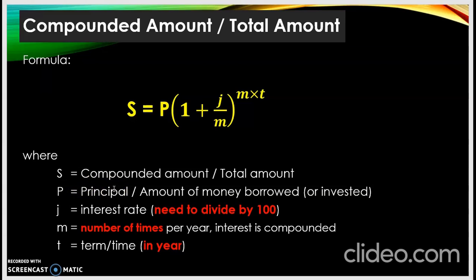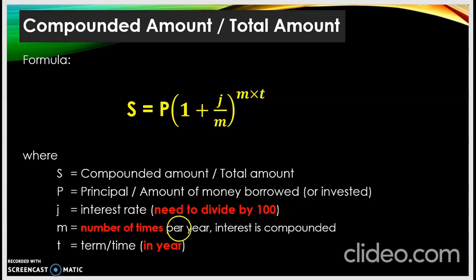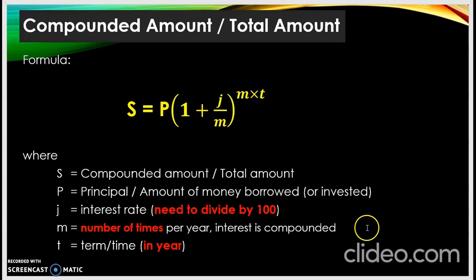P is the principal — pokok kita, duit yang kita ada, yang kita nak melabur ataupun yang kita pinjam. j ialah interest rate — kadar dia, kita guna j. Seperti biasa, j kena bagi dengan 100. M adalah number of times per year interest is compounded — setahun interest dia diberi berapa kali. Katakan setahun beri dua kali, m dia dua; jika setahun bagi tiga kali, m kita tiga. T adalah masa in terms of time.